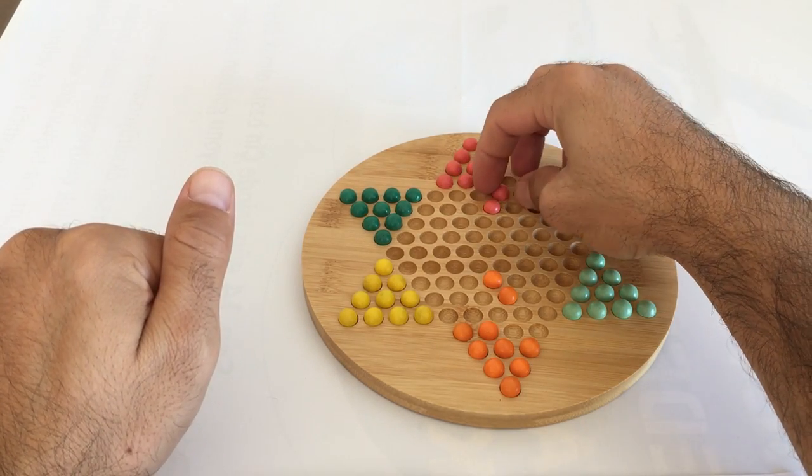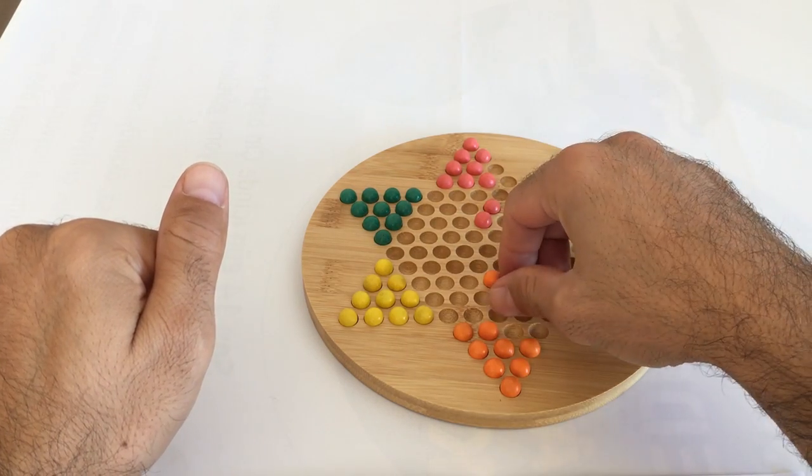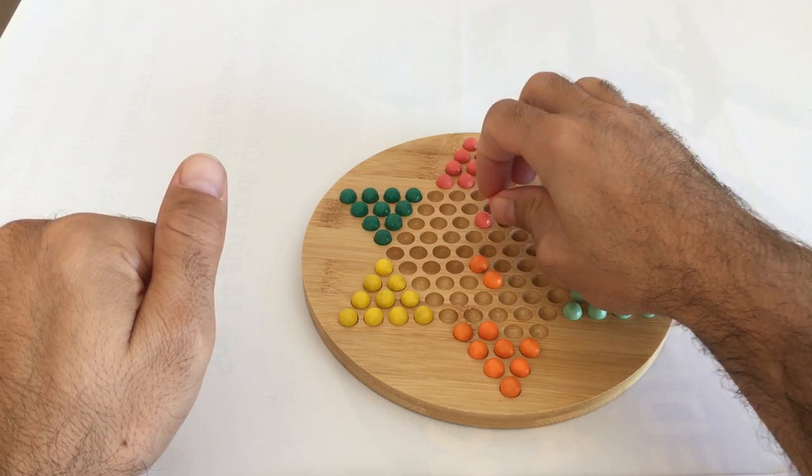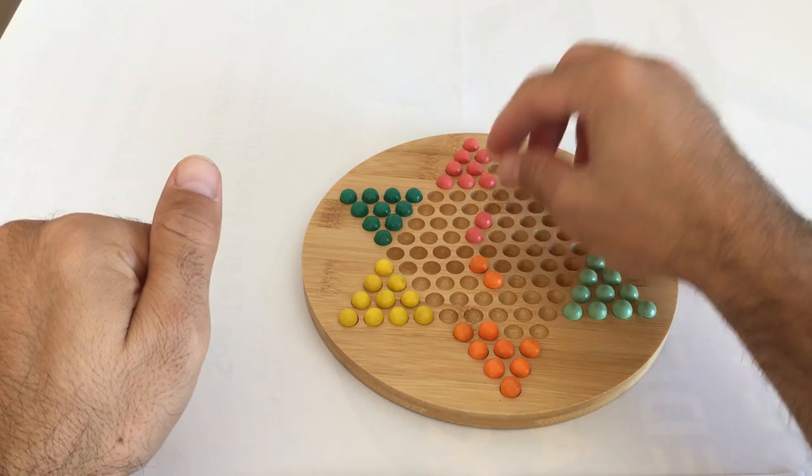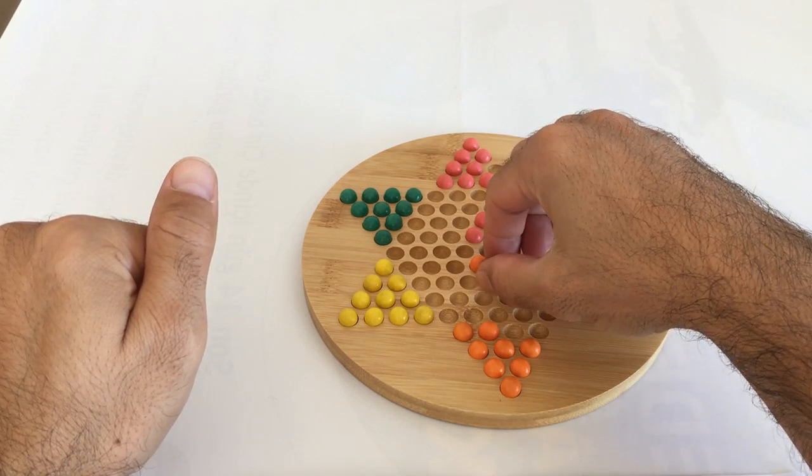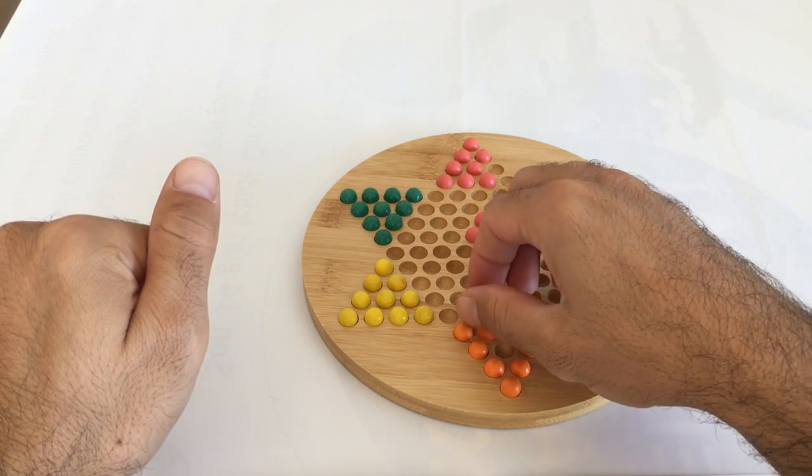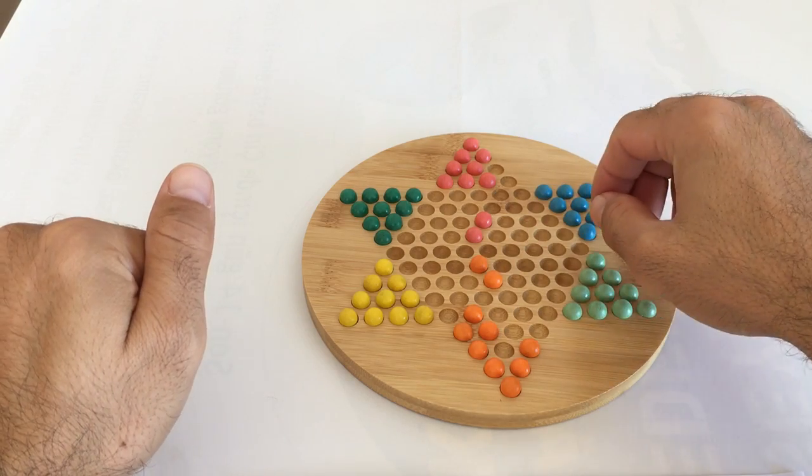And then, for example, he also can jump like that. And my turn, I can come like that. And his turn, here. And my turn, I can move that one. Okay. So it goes like that.